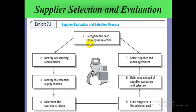This chart explains the supplier evaluation and selection process — the same steps discussed previously, but presented as a chart with 7 steps: (1) Recognize the need for selection, (2) Identify key sourcing requirements, (3) Identify potential supply sources, (4) Determine the sourcing strategy, (5) Limit suppliers in the selection pool, (6) Determine method of selection, and (7) Select supplier and reach agreement.